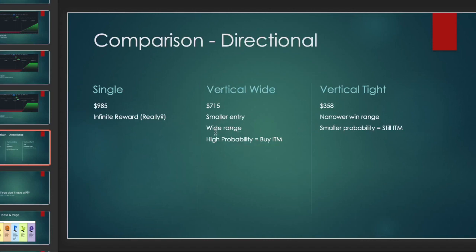You have a much wider range in which it can be in the money when you use the wider spread. You want to buy in the money, which is not necessarily the case in other spread types, but you can — that's the point. You can buy in the money because you're selling that other call which reduces your entry cost. On the tight vertical it's a much smaller range but you can still buy in the money because it's a vertical. We're talking a 50 to 100 percent difference between risking 700 and risking 350.